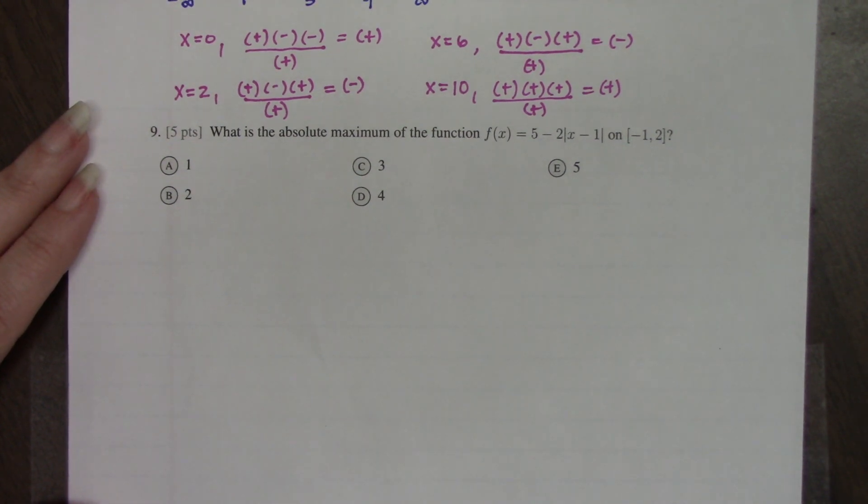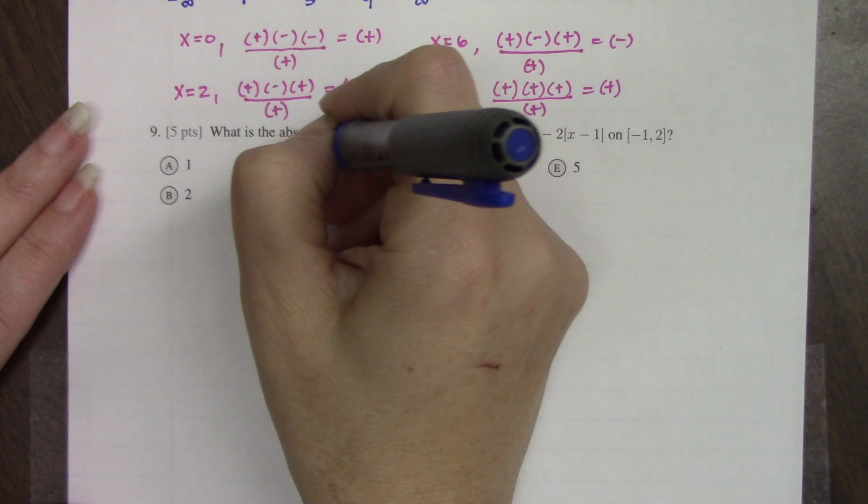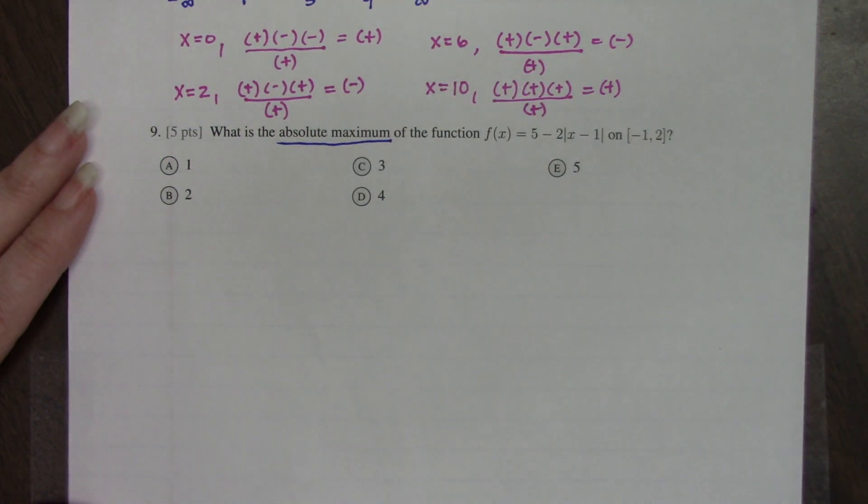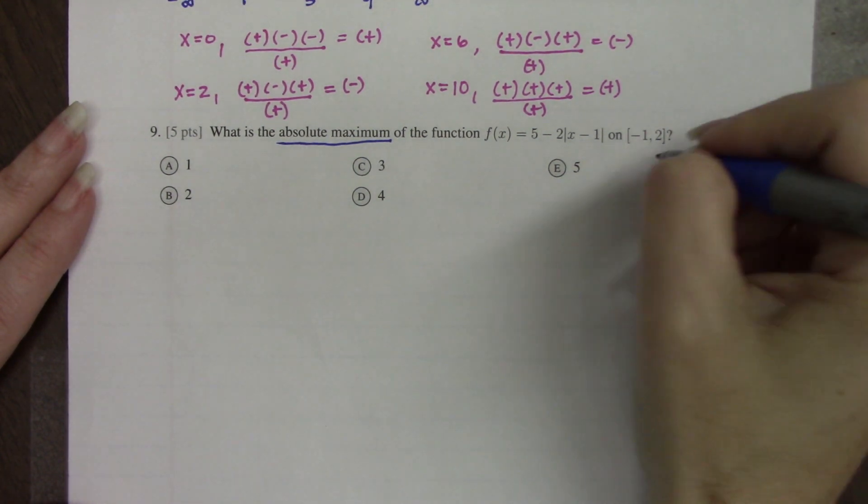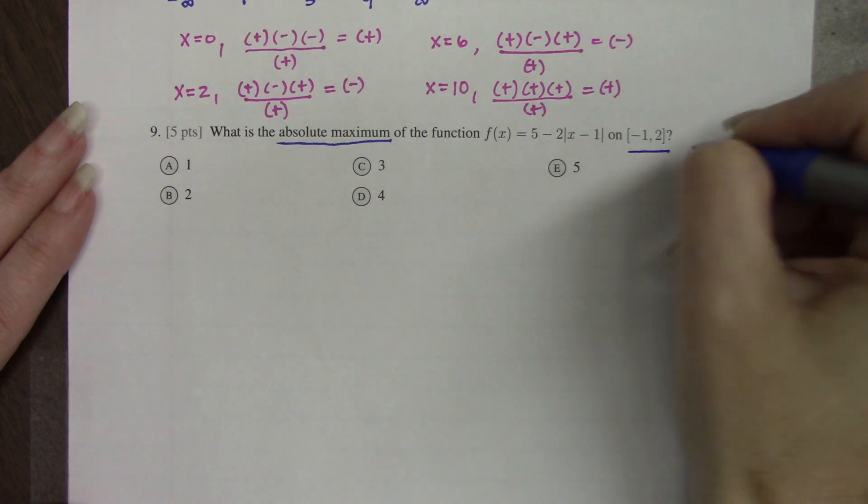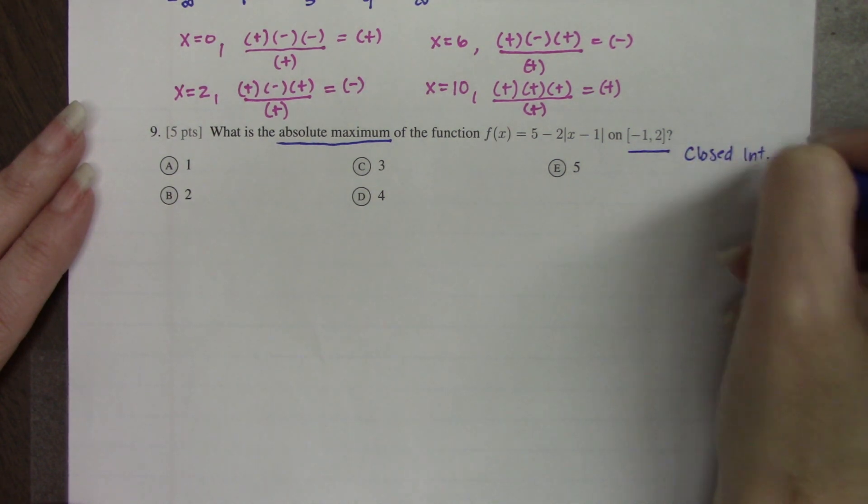Problem 9 says, what is the absolute maximum of the function f(x) = 5 - 2|x - 1| on this closed interval? So this is a closed interval, so we can use the closed interval method.